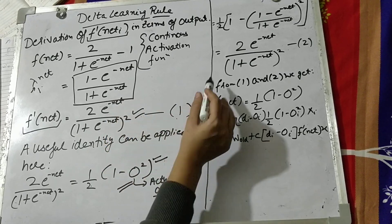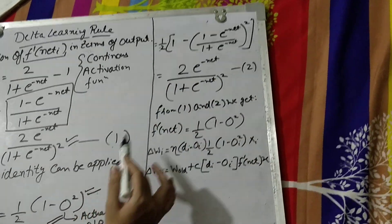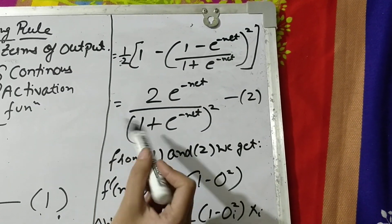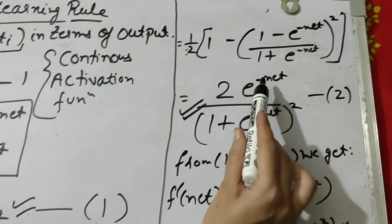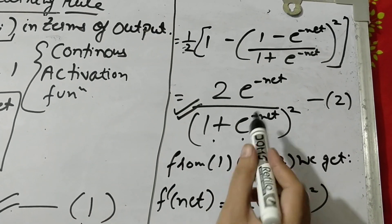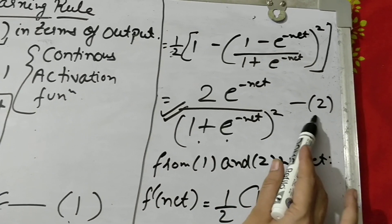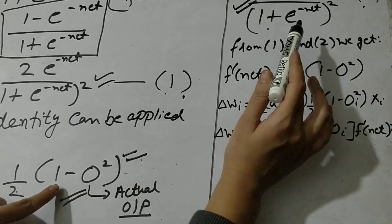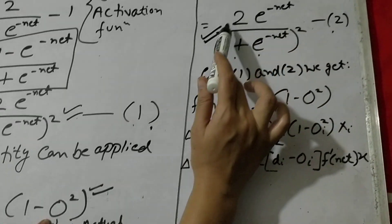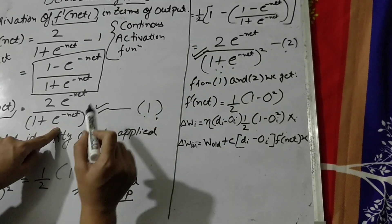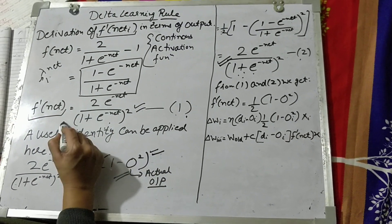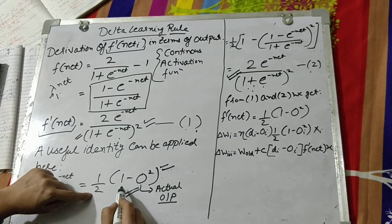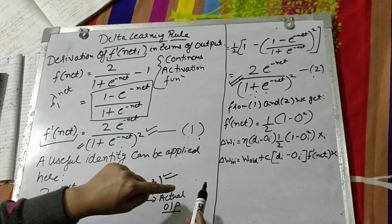We have written it in terms of o because here is o squared. When you cross multiply it, the output becomes: 2 times e raised to the power minus net, divided by (1 plus e raised to the power minus net). This is your second equation for this particular delta learning rule. Comparing it with equation 1, we have proved that f'(net) is equal to half of (1 minus o) squared.